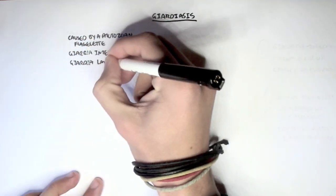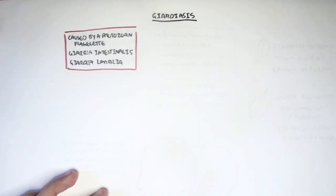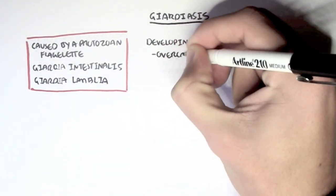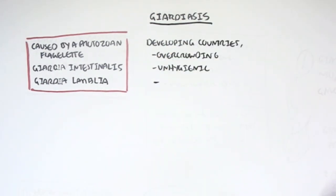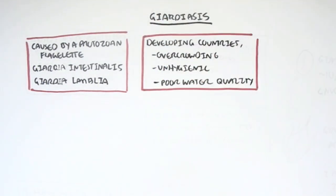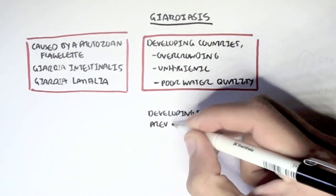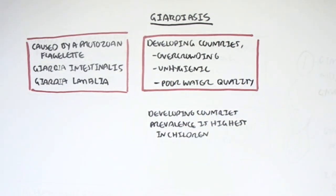Giardiasis is a particular issue in developing countries and is the main cause of diarrhea-like symptoms and abdominal pain. It is a major issue in developing countries because of overcrowding, the unhygienic environment and poor water quality control in these areas. In developing countries, the prevalence is highest in children, so you can imagine how it is a major issue.